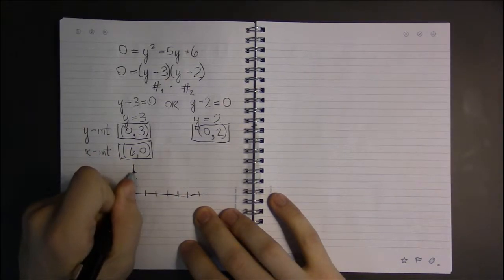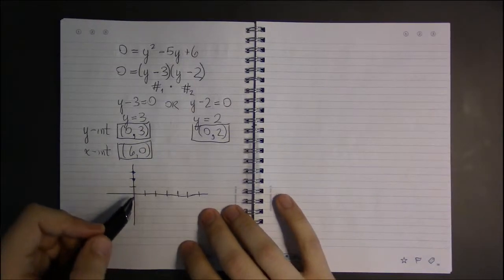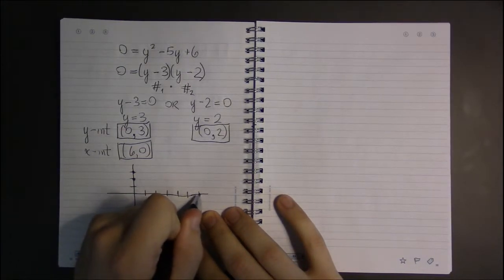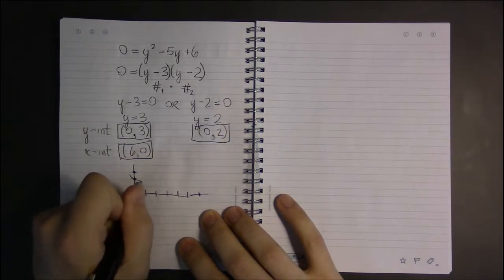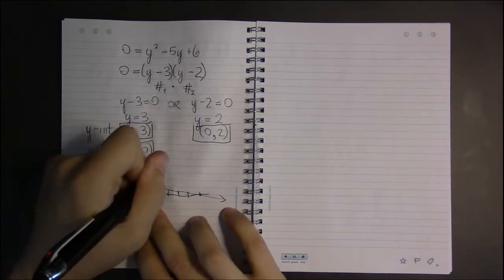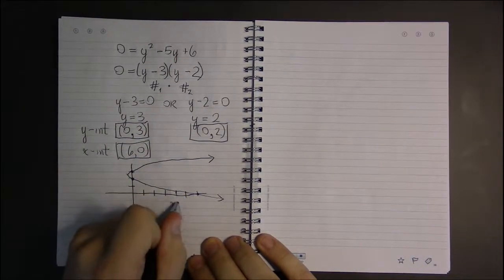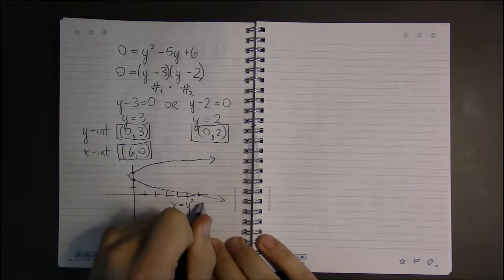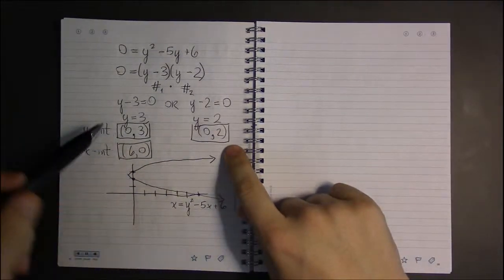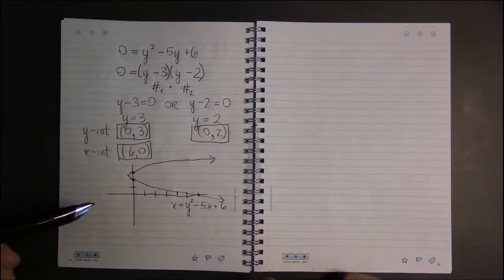We're going to have a y-intercept at (0, 3) and another y-intercept at (0, 2). And we have an x-intercept at the point (6, 0). So this graph is going to look something like this. It's kind of a parabola that's been flipped on its side. This is the graphical representation of this equation. The graph hits the y-axis at these two points and the x-axis at this point here.